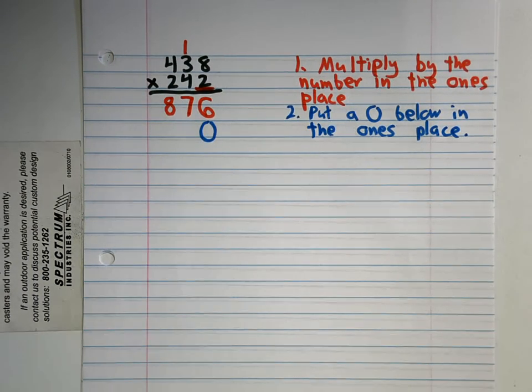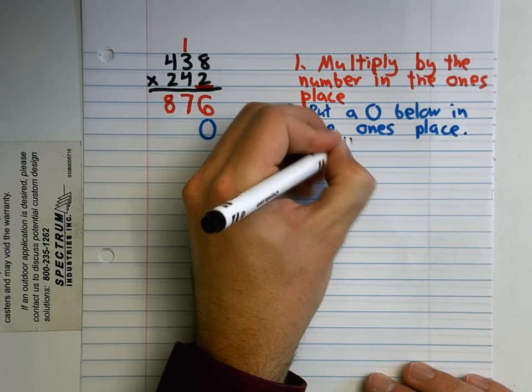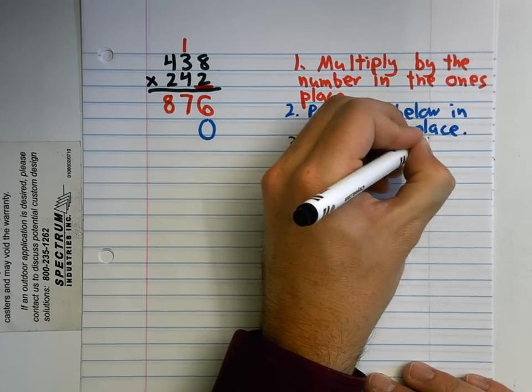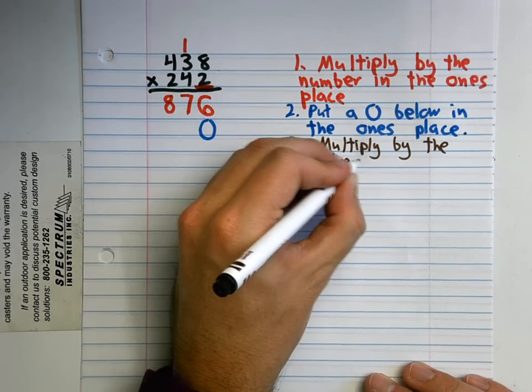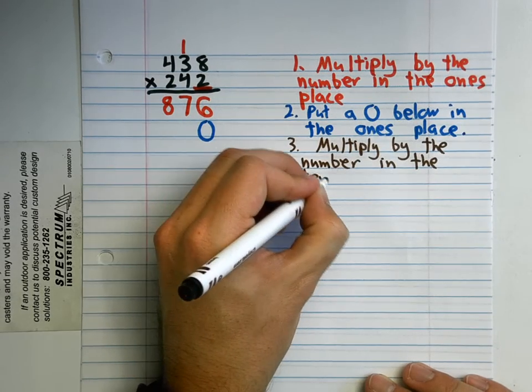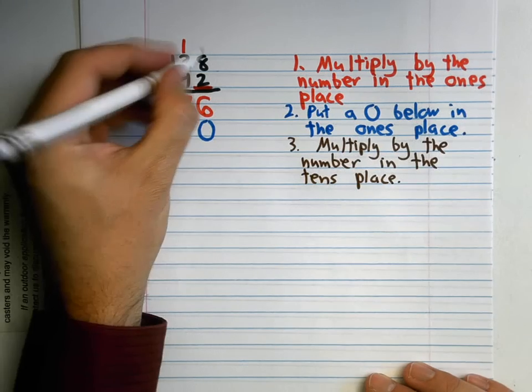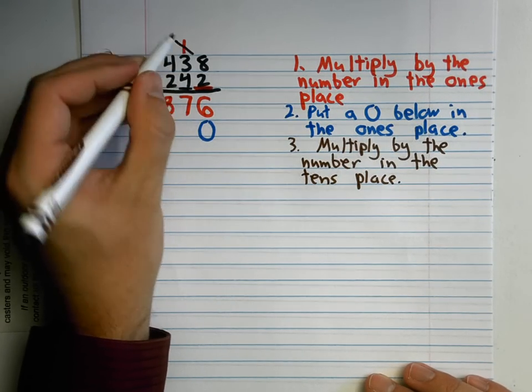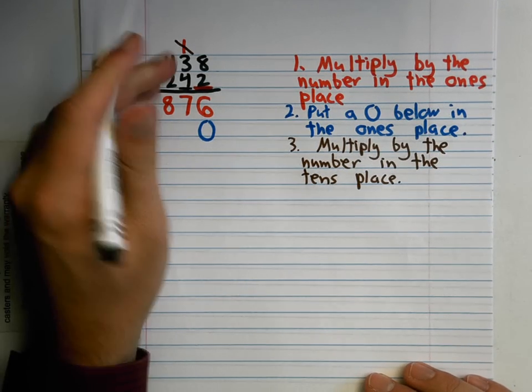That brings us to step number three: multiply by the number in the tens place. In this case it's going to be this 4 right here. And I'm going to cross out this 1 because I don't need it anymore.